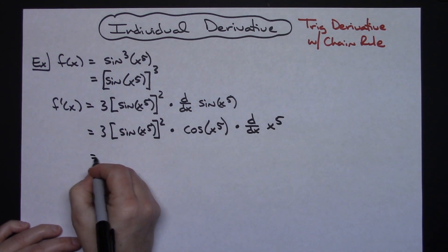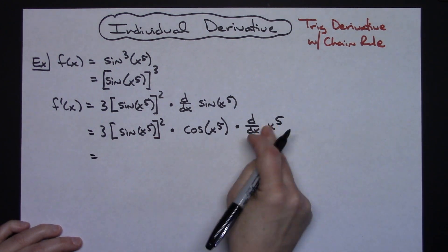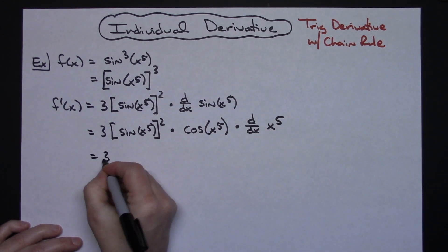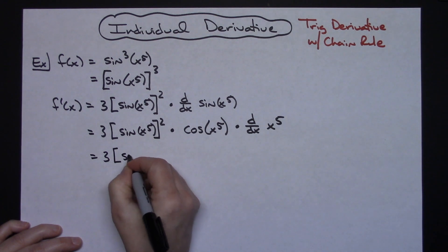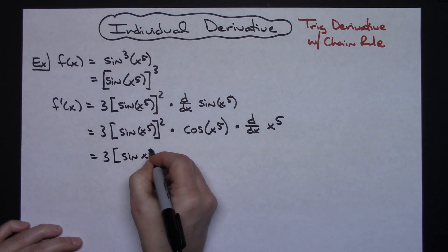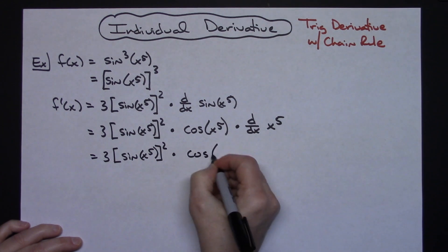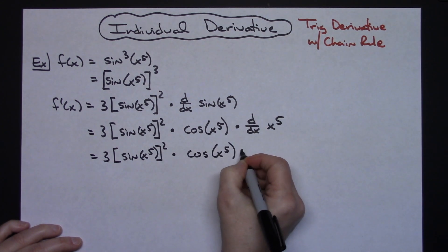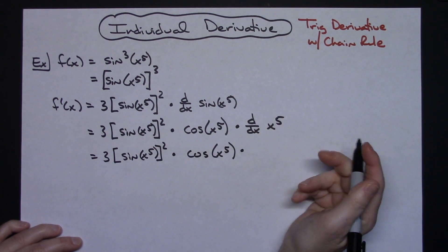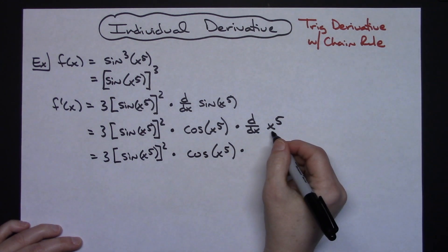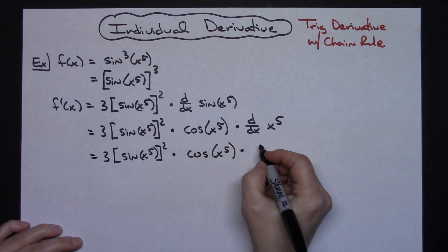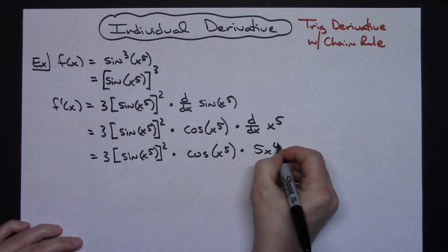Again leaving the first part alone and just doing that last derivative right there. Three times the sine x to the fifth quantity squared times cosine x to the fifth. Doing nice simple derivative there because it's just a nice little polynomial individual term there. So five x to the fourth.